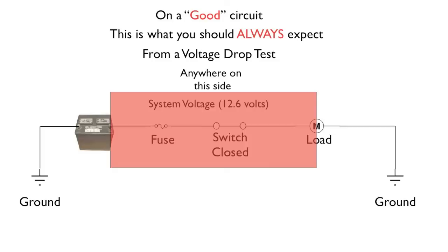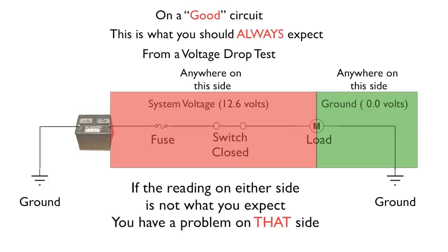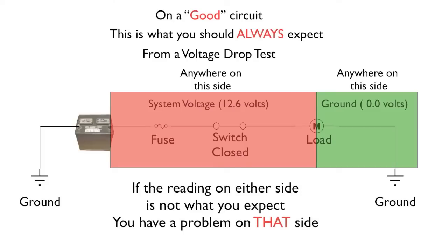Here's your circuit. And anything from the battery positive to the load should have battery voltage. And anything on the ground side should have zero volts. If the reading on either side is not what you expect, then you have a problem on that side.